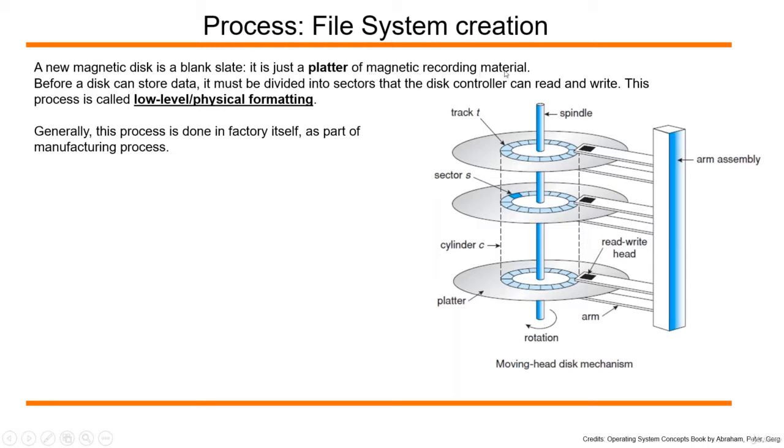This is one platter. A disk can have multiple platters. If I take one platter, it has two surfaces: surface one and a surface at the bottom. Before this platter can store data, it must be divided into tracks.